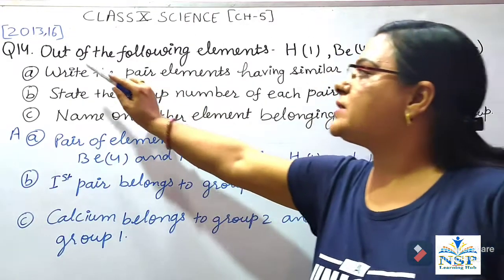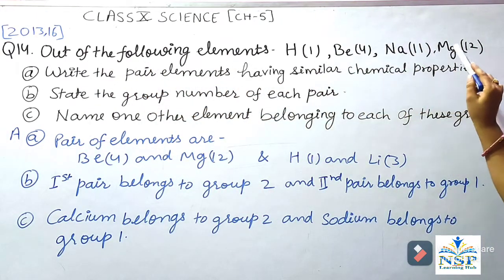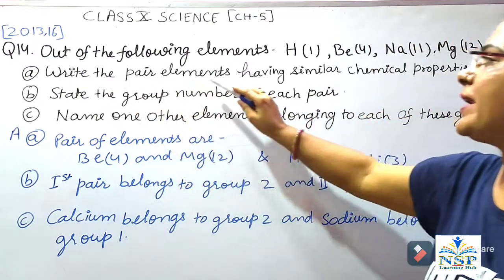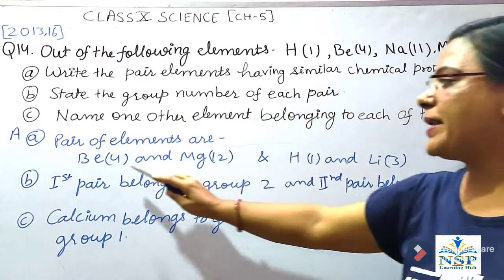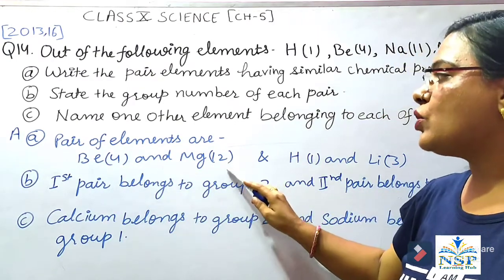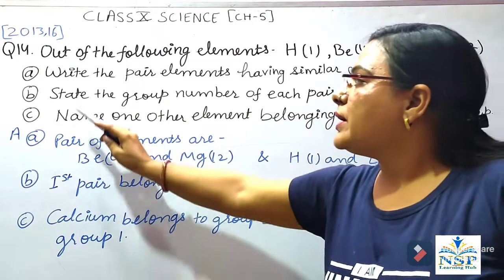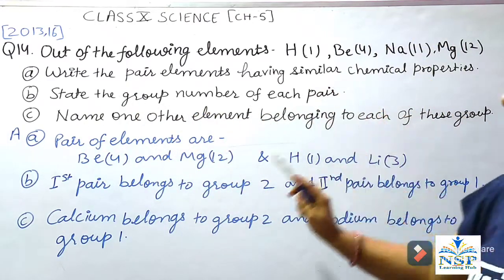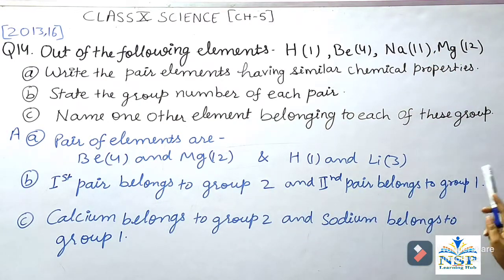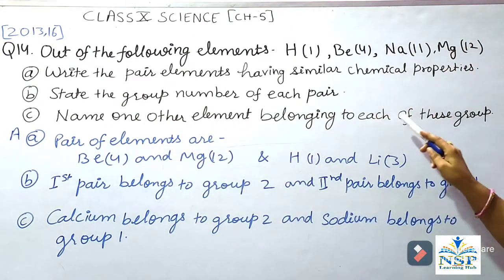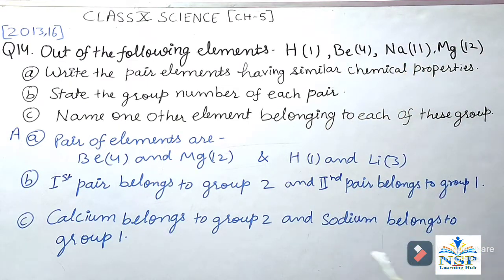Question No. 14: Out of the following elements — hydrogen (1), beryllium (4), sodium (11) and magnesium (12) — write the pairs of elements having similar chemical properties. The pairs are: beryllium and magnesium, because both have valency 2; and hydrogen and lithium, because both have valency 1. First pair belongs to Group 2 and the second pair belongs to Group 1. One other element belonging to Group 2 is calcium, and one other element belonging to Group 1 is sodium.